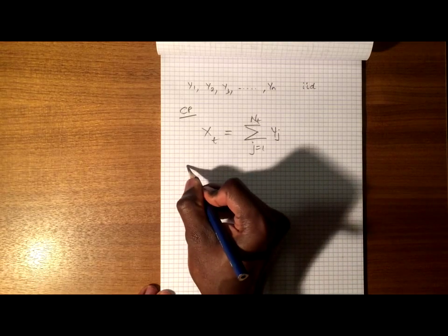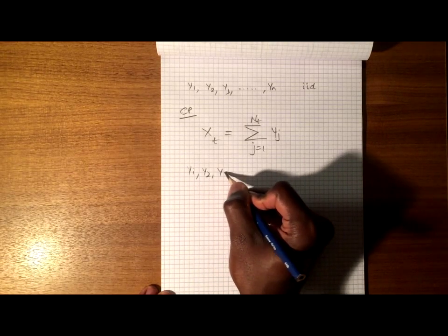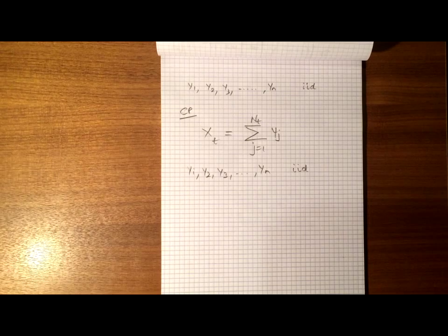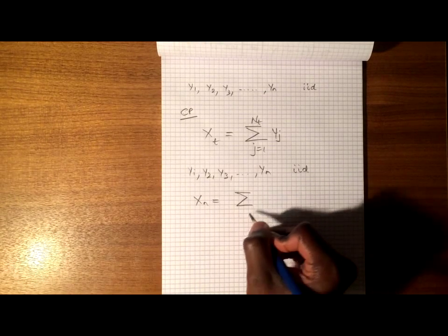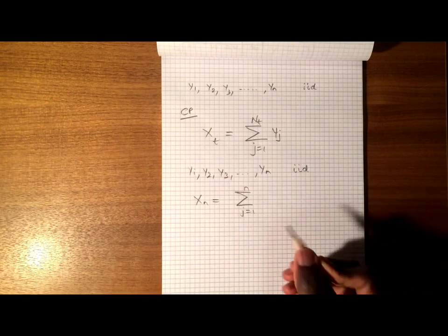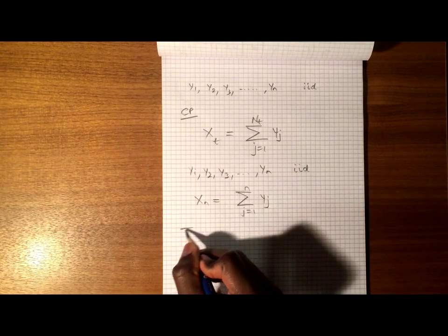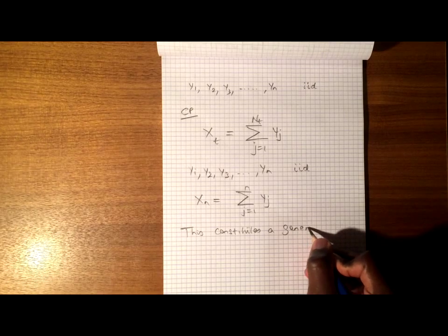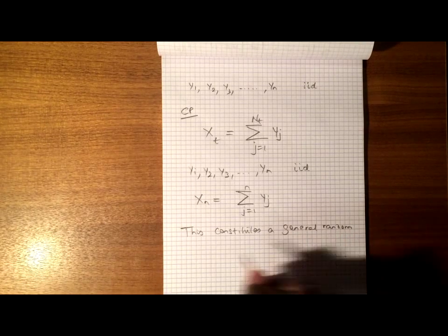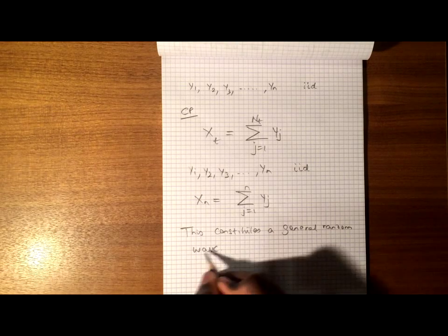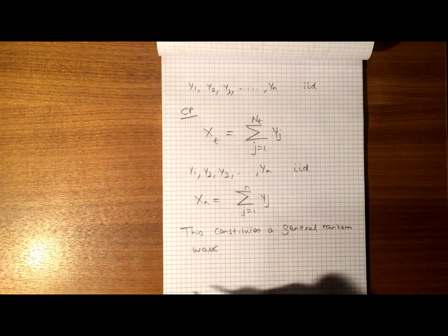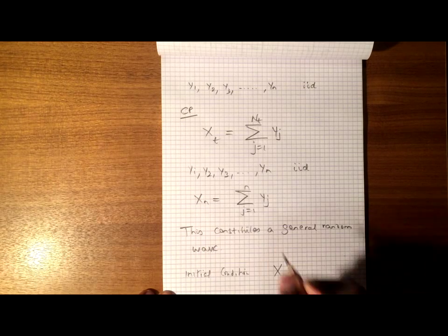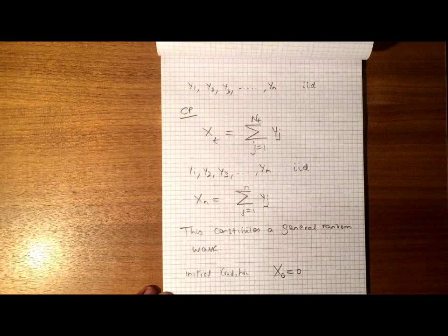If further that we have our iid random variables all the way up to yn, which as we said before, they are iid, and we denote xn to be equal to the sum from j equals 1 to little n of yj, this constitutes a general random walk. Now it constitutes a general random walk only if the initial condition is satisfied, and the initial condition is that x of 0 must be equal to 0.